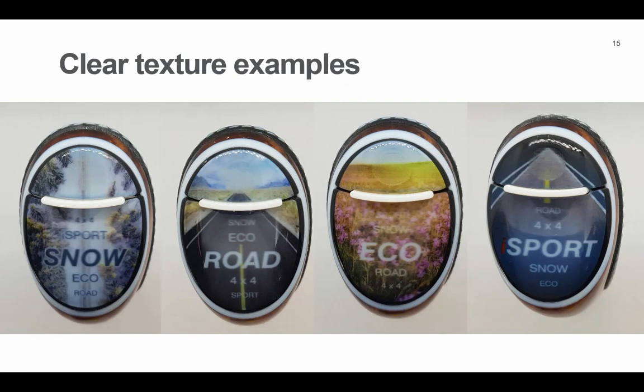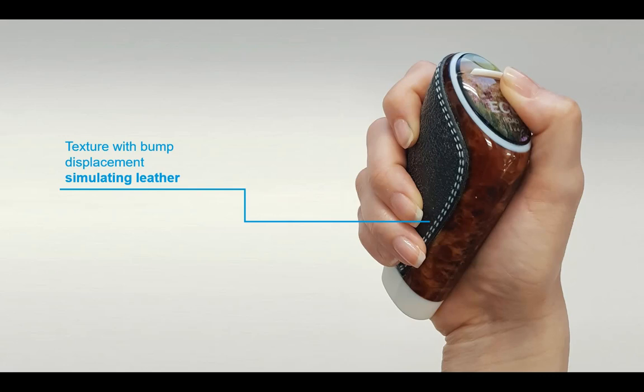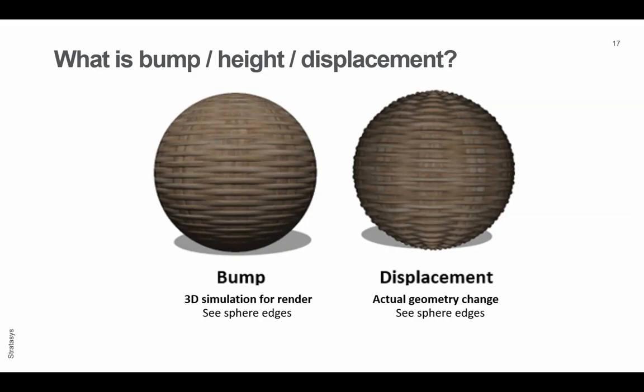Then we're going to move on to the most complicated to achieve, and that is the texture with bump displacement. That is what we're going to do to simulate leather, and it could be used to simulate a whole range of different effects.